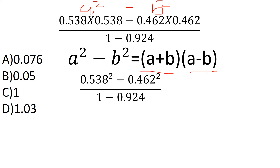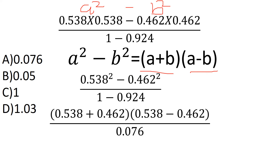So I will apply: 0.538 squared minus 0.462 squared equals 0.538 plus 0.462 multiplied by 0.538 minus 0.462. After simplification, that gives 1 times 0.076, which simplifies to the result.